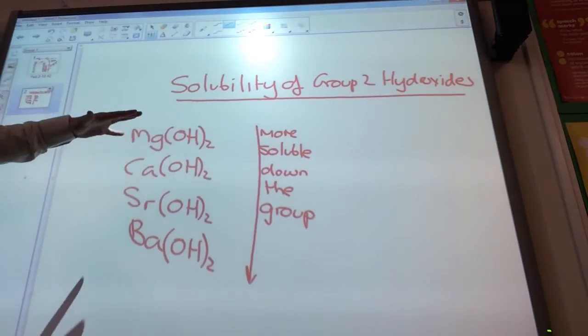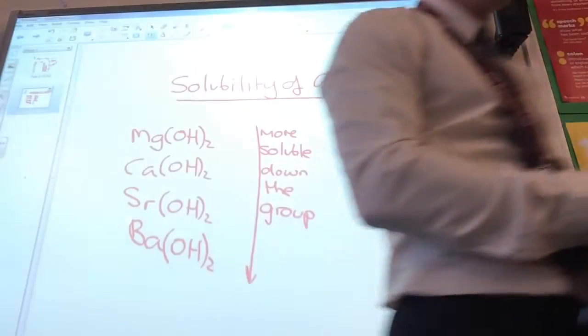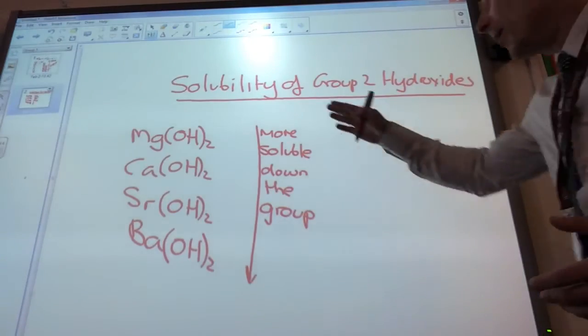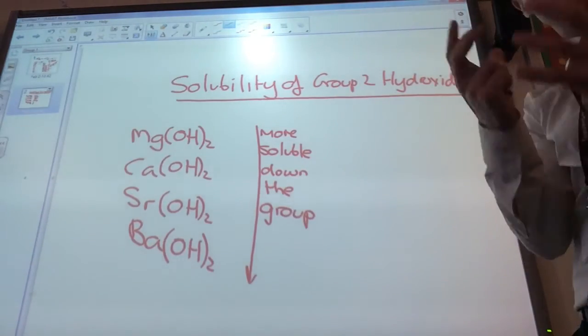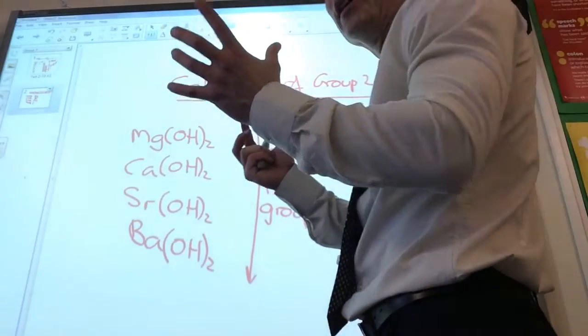So magnesium hydroxide is only sparingly soluble, or it's insoluble, and then it goes gradually down. And barium hydroxide is soluble in water. And you would have seen this. How did you see these? What color were they?